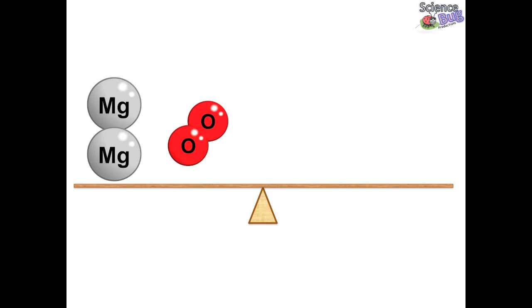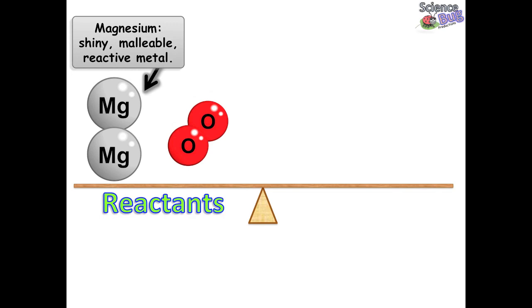So there you have it. Let's go over this one more time. First of all, our reactants include magnesium, which is a shiny malleable reactive metal, and oxygen, which is a clear gas.